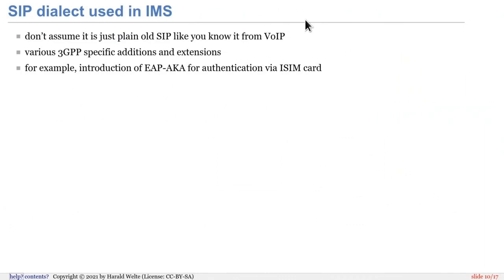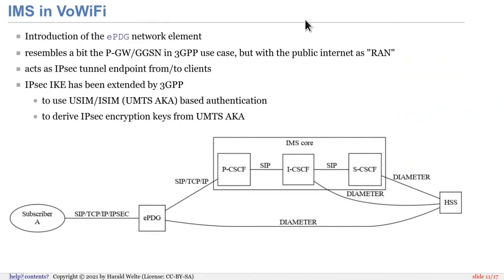If we look at how IMS is used in voice-over Wi-Fi — I'm using that case because it's a simpler case compared to voice-over LTE — we have the IMS core network here with the PCSCF, ICSCF, and SCSCF as just discussed. They talk to an HSS over Diameter, which is not part of the IMS core itself — it's the same HSS normally used for LTE or other authentication in a telco network. And we have a new additional network element: the so-called EPDG, the Evolved Packet Data Gateway, which sits between the subscriber and the IMS core.